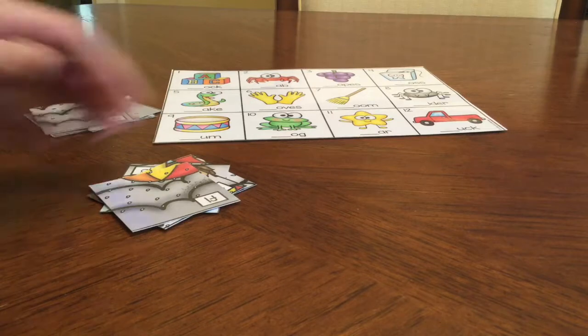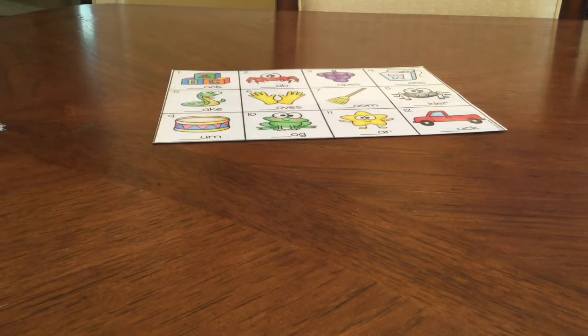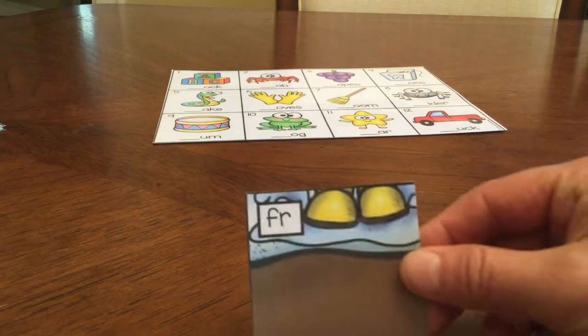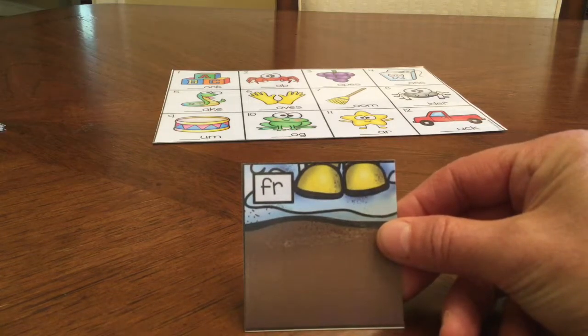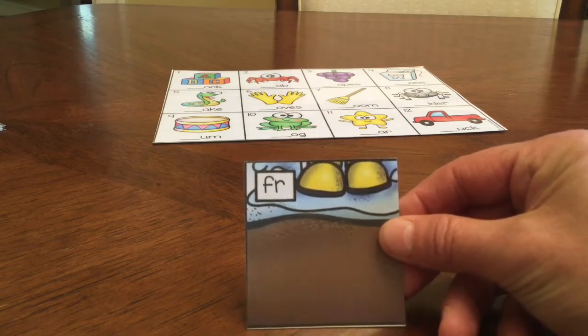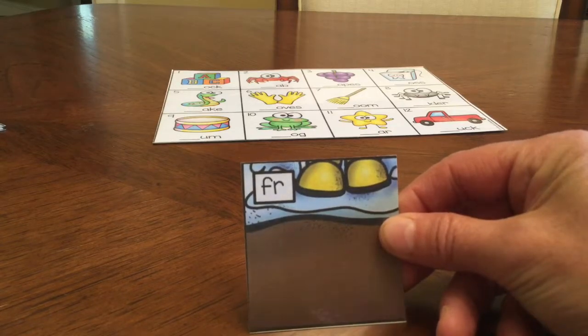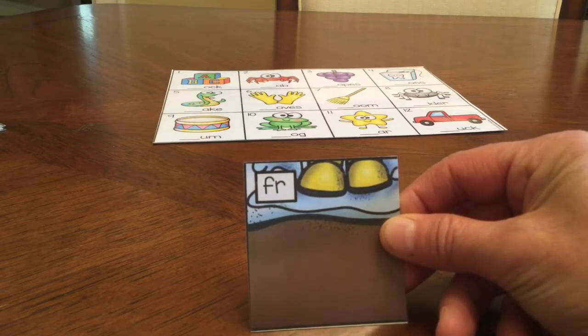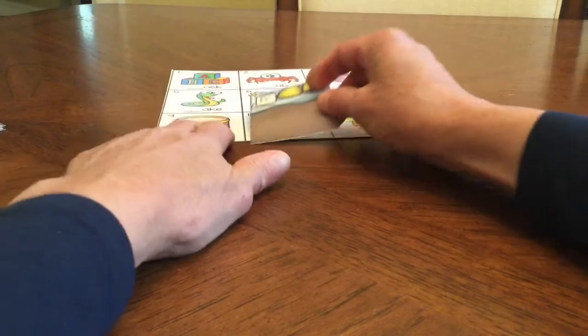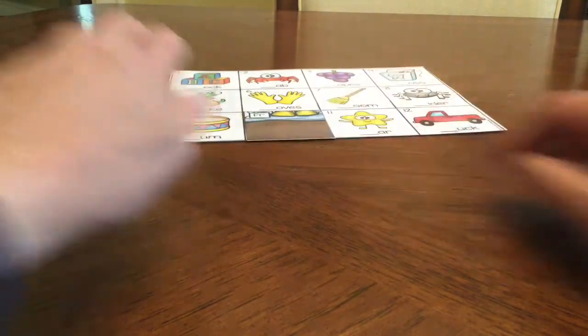Then each student would take their group of cards and look at the letter. So this is FR, the blend fur. So I've got to look at the picture and see which picture goes with this blend, fur, frog. So I would put that on top of my frog picture.